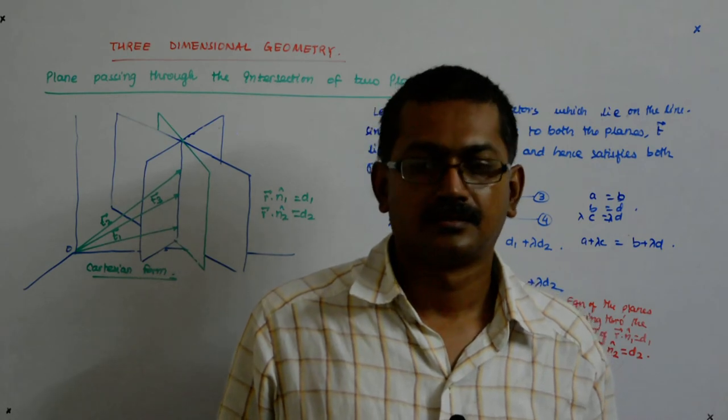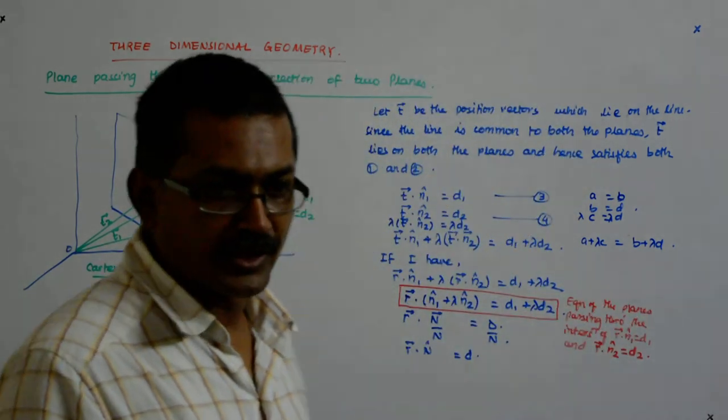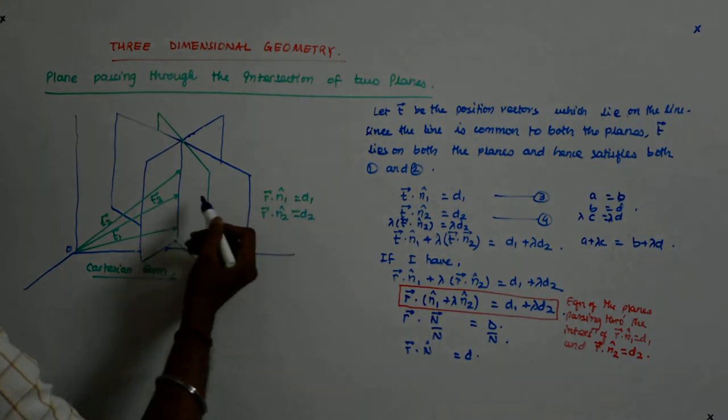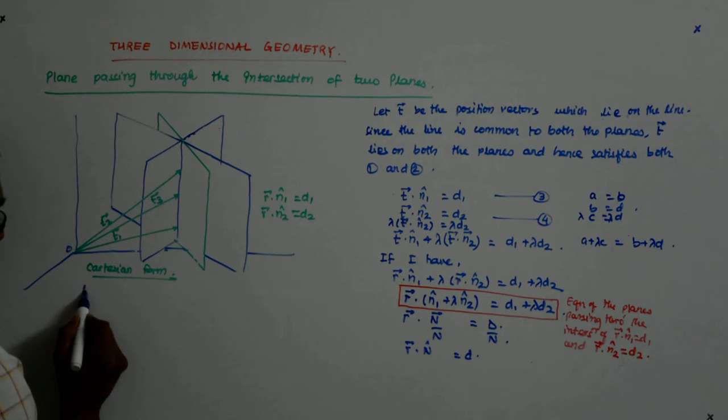Direction cosines. If it is unit vector, then the coefficients become direction cosines.